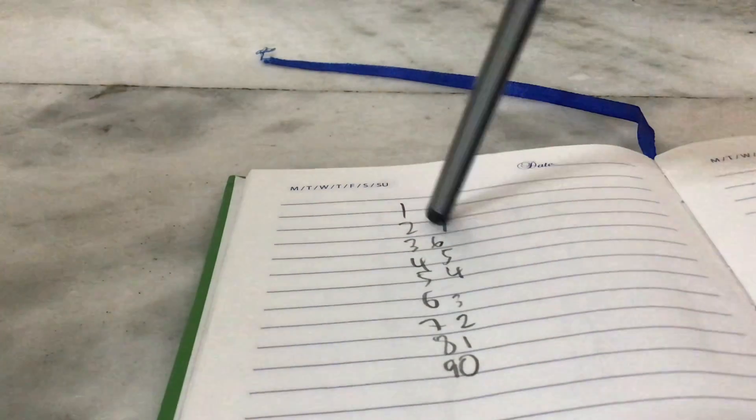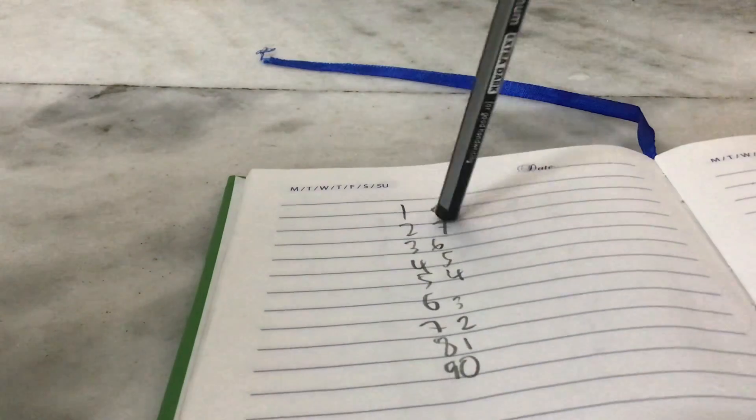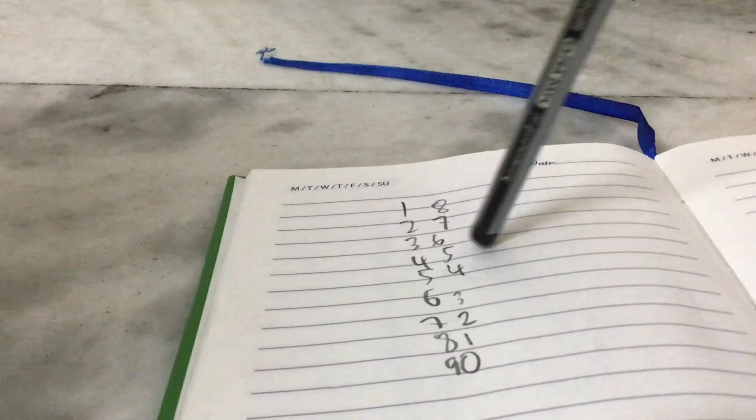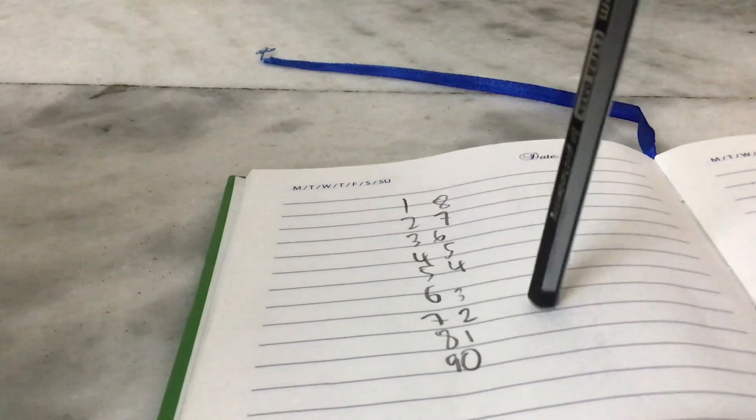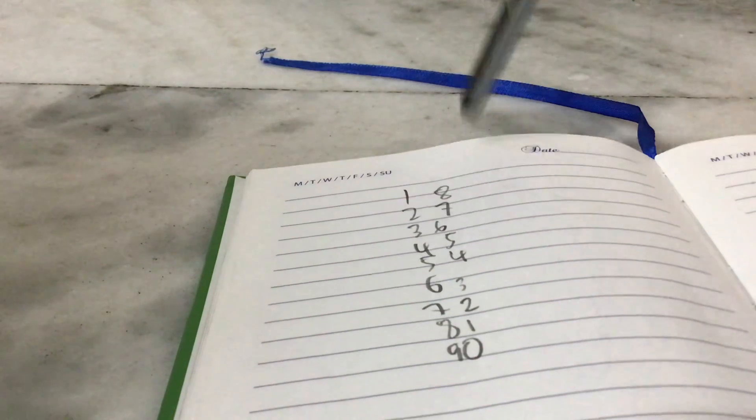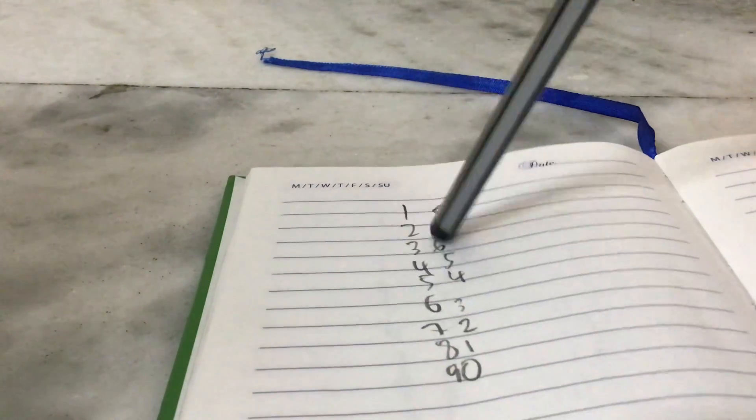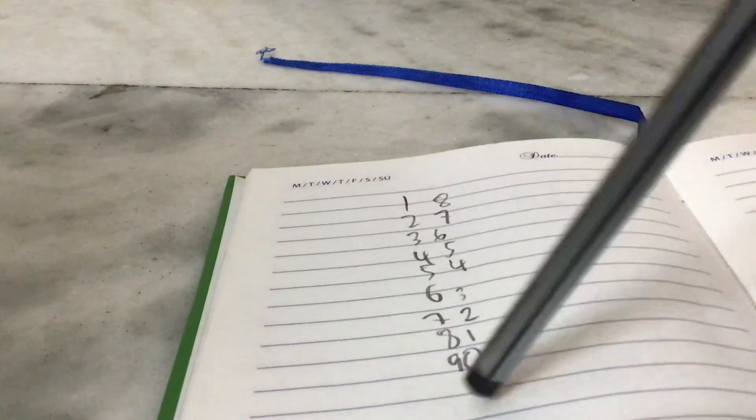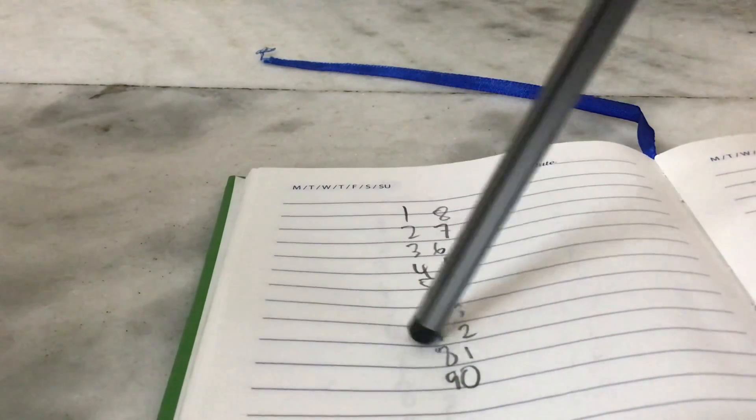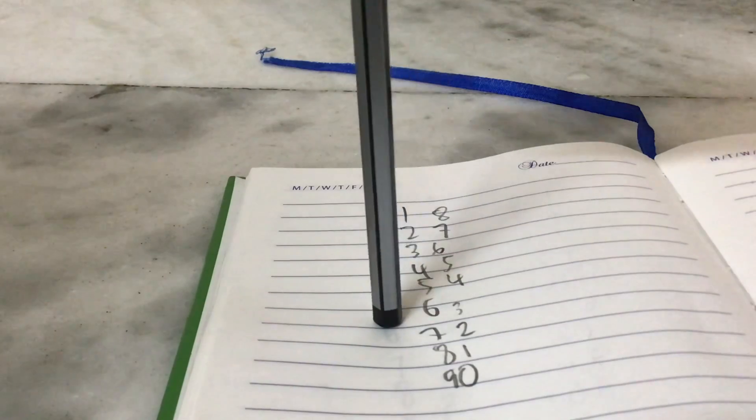That's all you got. Nine ones are nine, nine twos are eighteen, nine threes are twenty-seven, nine fours are thirty-six, nine fives are forty-five, nine sixes are fifty-four, nine sevens are sixty-three, nine eights are seventy-two, nine nines are eighty-one.